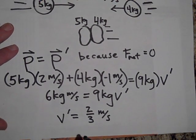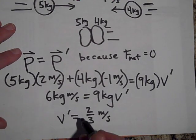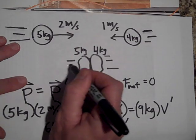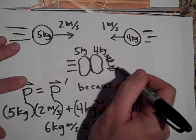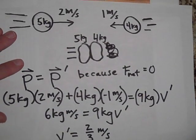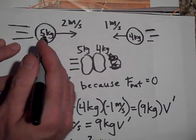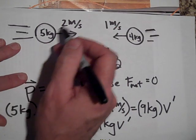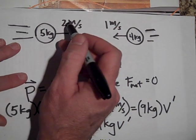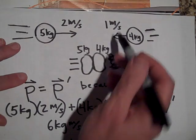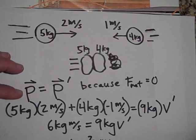The direction is positive — meaning it moves in the direction of the original 5 kg mass, which makes sense. The 5 kg mass had +10 kg·m/s of momentum, and the 4 kg mass had −4 kg·m/s, so the total momentum was positive at +6 kg·m/s.